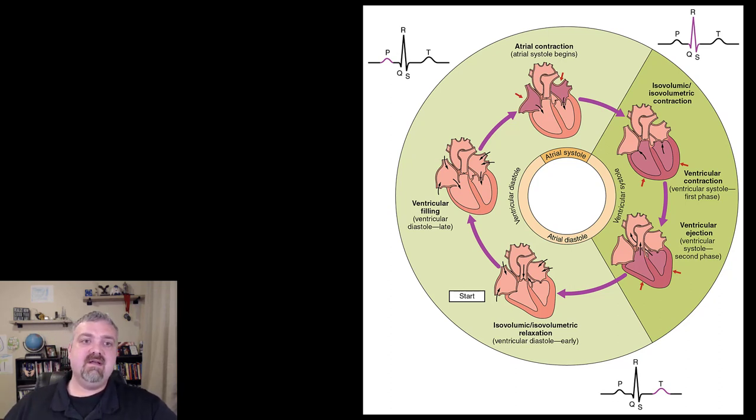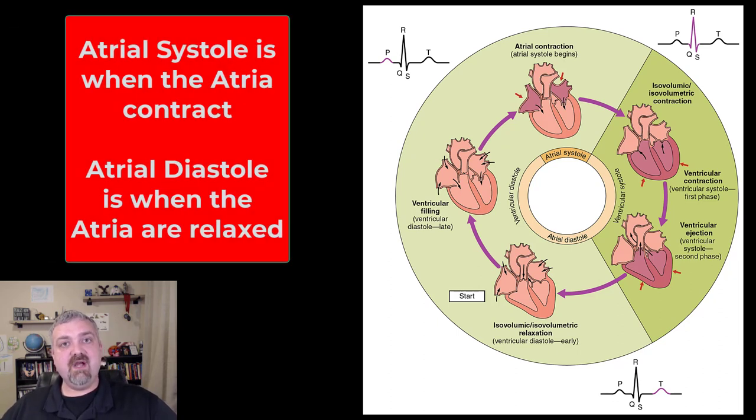So the cardiac cycle is a combination of systole and diastole. We have atrial systole, which is when your two atria are contracting.